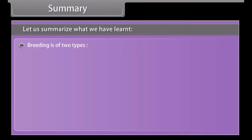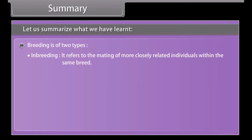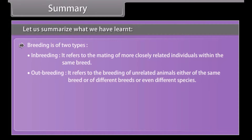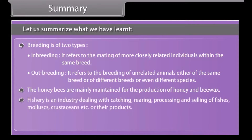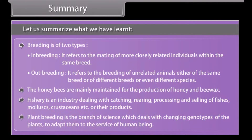Breeding is of two types: inbreeding, which refers to the mating of more closely related individuals within the same breed; and outbreeding, which refers to the breeding of unrelated animals either of the same breed, different breeds, or even different species. The honeybees are mainly maintained for the production of honey and bee wax. Fishery is an industry dealing with catching, rearing, processing and selling of fishes, mollusks, crustaceans, etc., or their products. Plant breeding is the branch of science which deals with changing genotypes of plants to adapt them to the service of human beings.